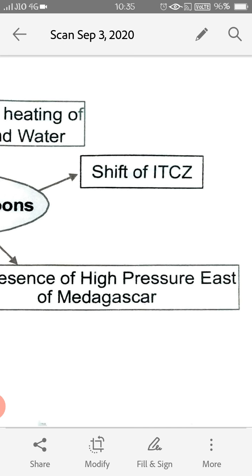The presence of high pressure area east of Madagascar at 20 degrees south over the Indian Ocean. The intensity and position of this high pressure area affects the Indian monsoon. As I have already explained, near the water bodies it is always having a high pressure area.